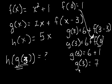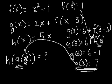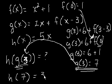And now we know what g of 3 is equal to. We can substitute that back here. We know g of 3 is equal to 7, so that's the same thing as h of 7. And h of 7 is just equal to 5 times 7 equals 35.